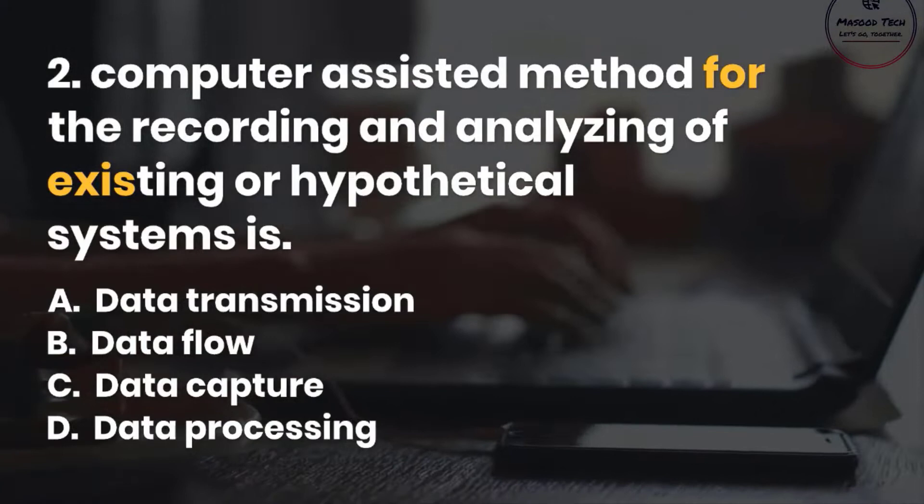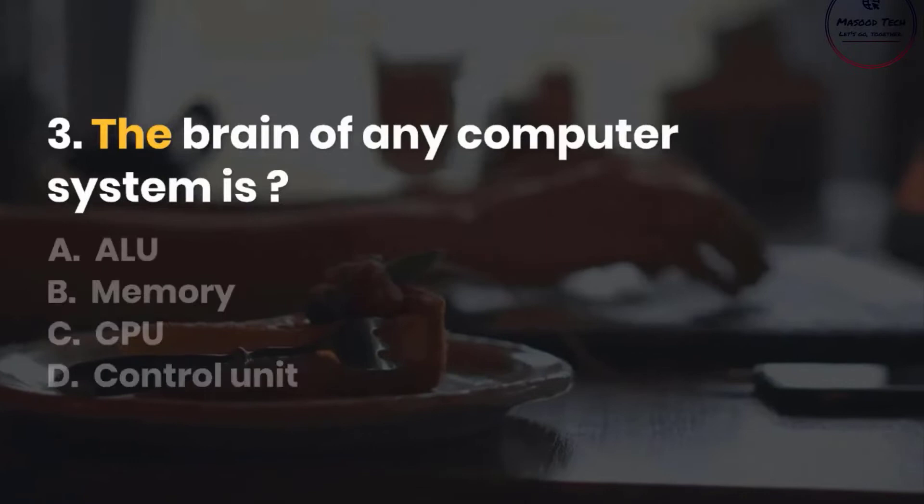Number 3. The brain of any computer system is: A. ALU. B. Memory. C. CPU. D. Control unit. Correct answer is C.